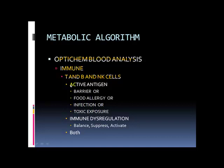On that panel we get a measurement of your T helper to T suppressor ratio. If that ratio is above 2, we say you have an active antigen — meaning you have an active invader, something foreign that your immune system is continuously activating against.